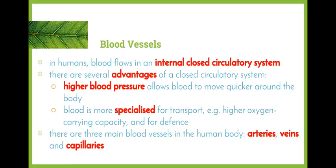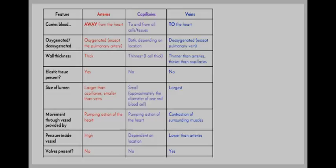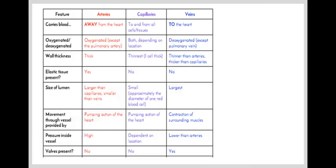There are three main blood vessels in the human body, which are arteries, veins, and capillaries. This table summarizes the three different types of vessels quite nicely. The features that are listed there include things like carries blood, is the blood oxygenated or deoxygenated, how thick are the walls, do they have elastic tissue, what is the size of the lumen. The lumen is the opening through which the blood passes. Movement is provided by what, is the pressure inside the vessel, and are there valves present.